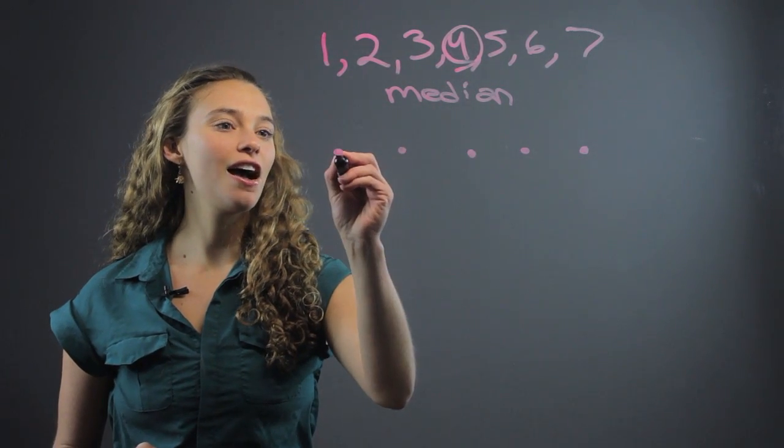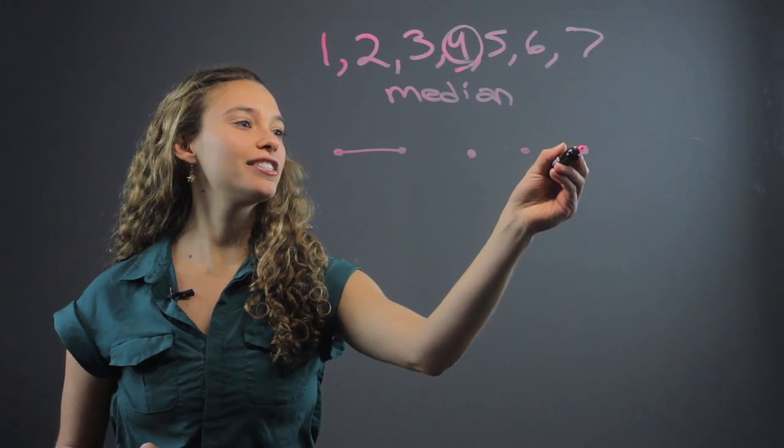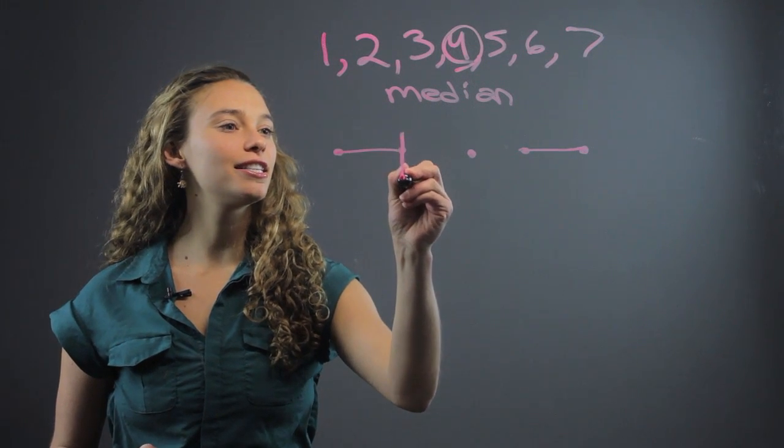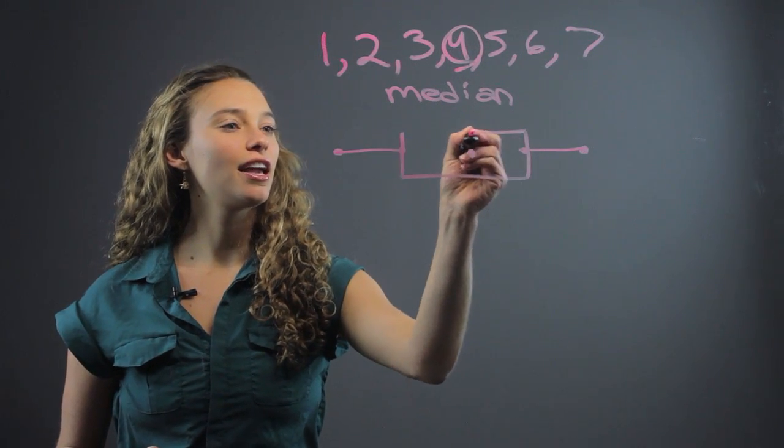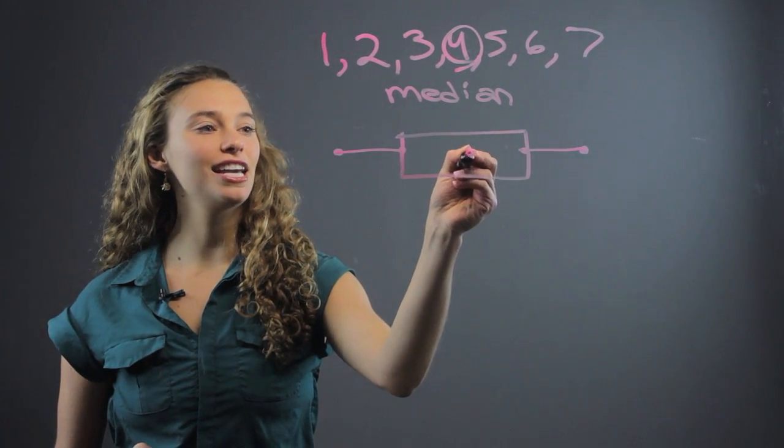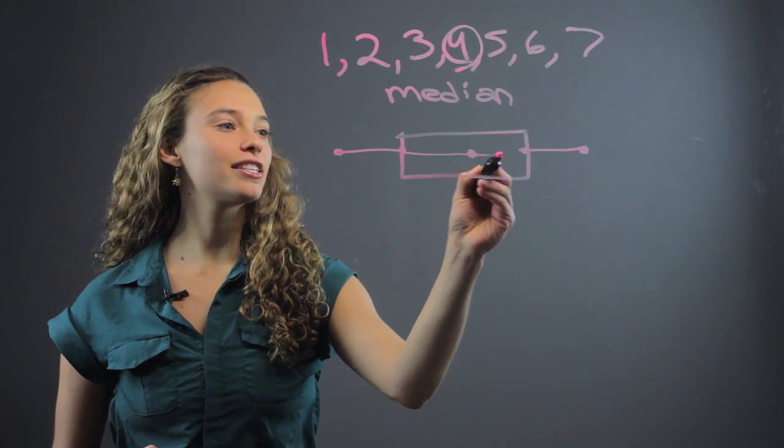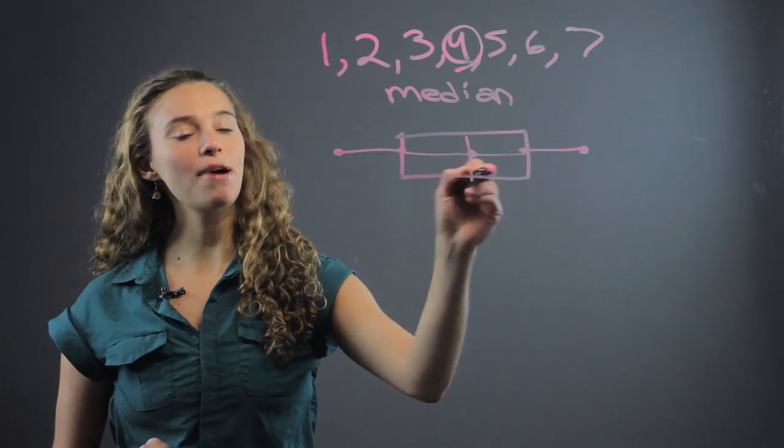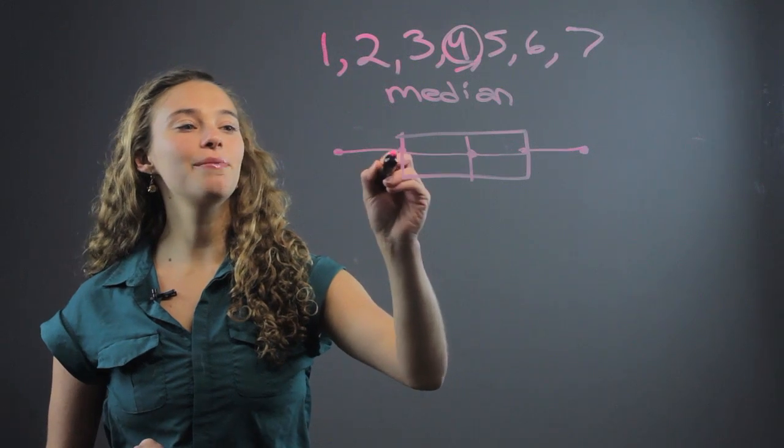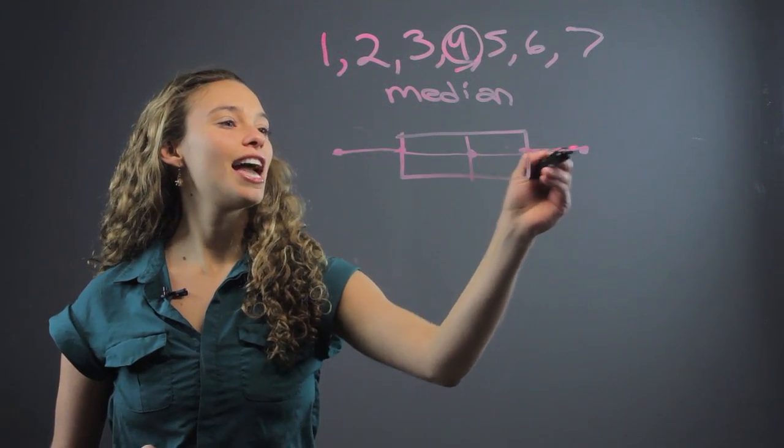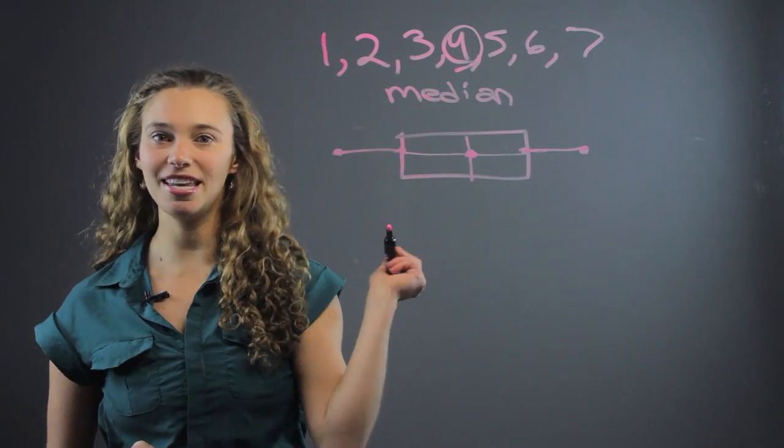Then we have these, this part is the whiskers. And this is the box. And you draw like that with the median in the middle. And this is the line here. And so it's like the box right here with the whiskers coming out, and the middle of the box is the median.